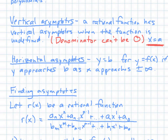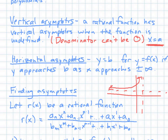Horizontal asymptotes are values that your y value actually approaches as x heads to infinity and negative infinity. For example, if you have a vertical asymptote, this line is where y equals b, and notice that both arrows are heading towards that horizontal asymptote — just approaching it, never actually touching it.